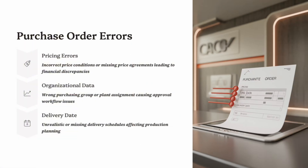Part 2: Purchase Order Errors. After master data, the next big source of mistakes in SAP MM is the Purchase Order. Since the PO drives the entire procurement cycle, even a small error here can cause serious downstream problems. The most common PO errors include: Incorrect Account Assignment Category — if you choose the wrong assignment, like cost center versus asset, the system may reject the invoice later.